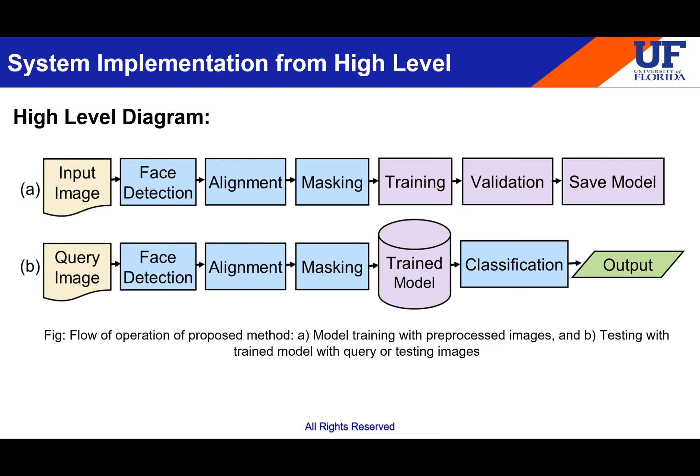Pre-processing is needed because raw images vary — somebody may have a tilted head, a white background, or be standing very close to the camera. It's important to have everyone at the same standard. So every time I take an input image, I do face detection, then alignment so that everyone's eyes, nose, and lips are in the same line. Then I do masking using an elliptical mask to get rid of extra areas like hair on the forehead or earrings.